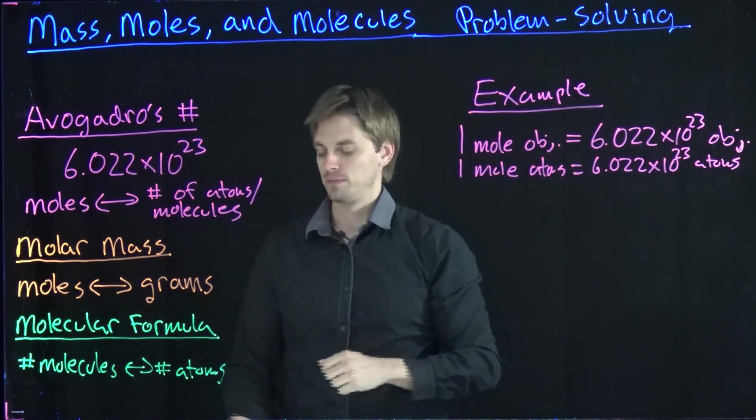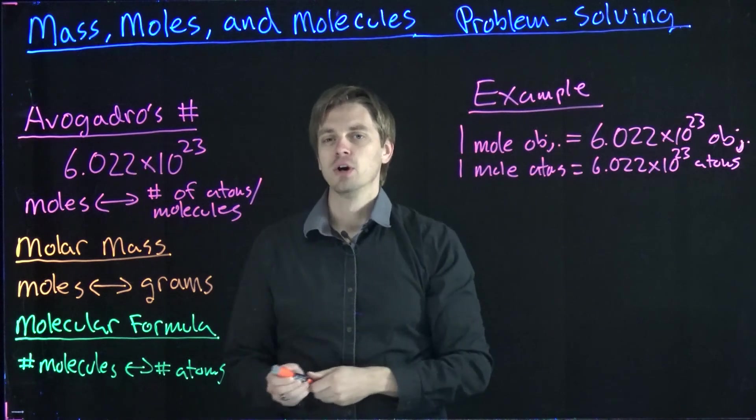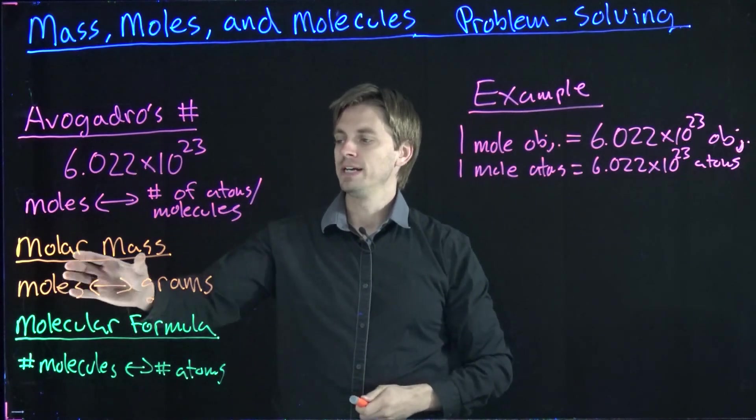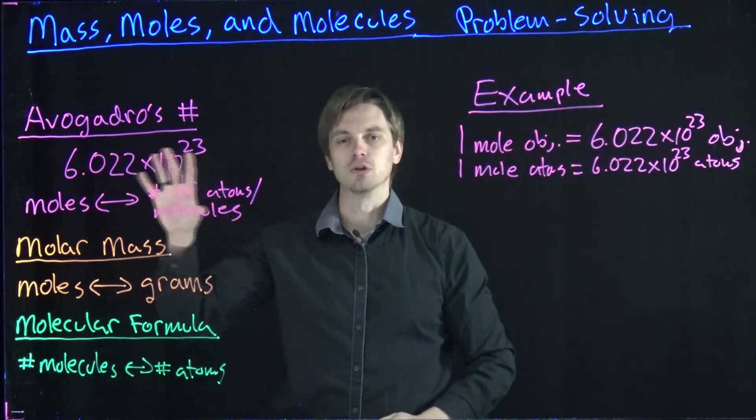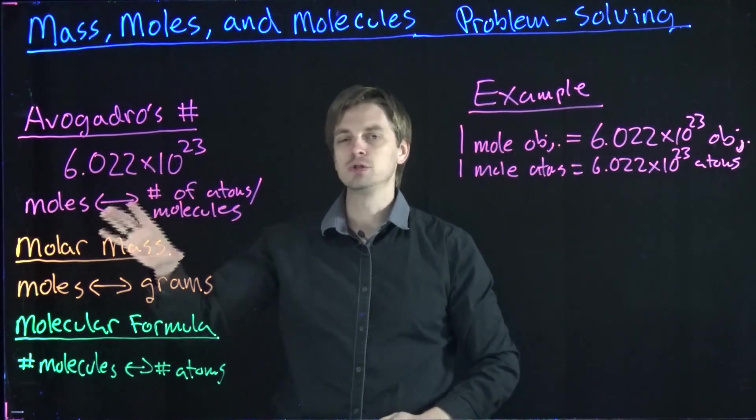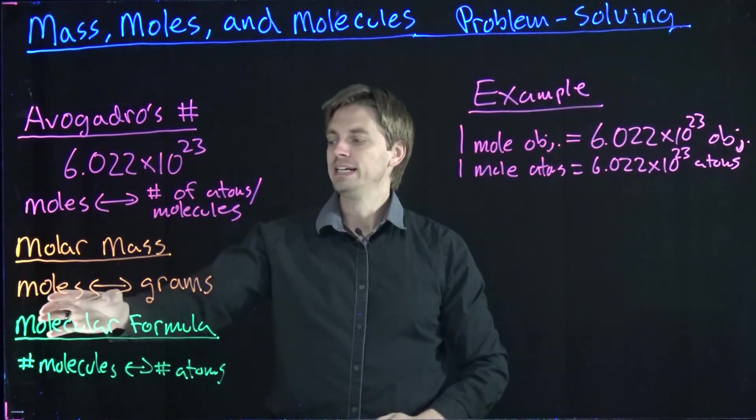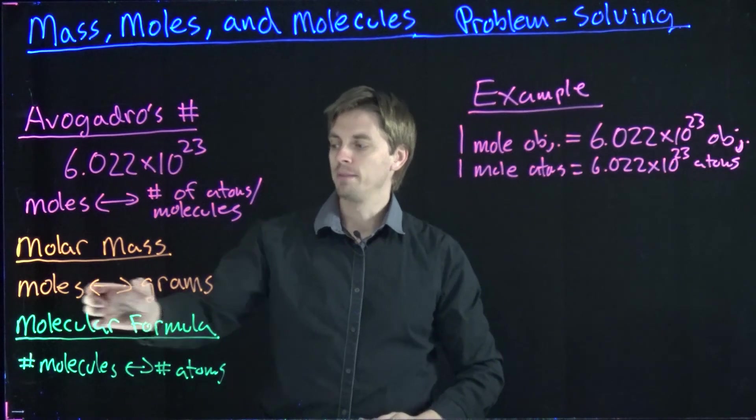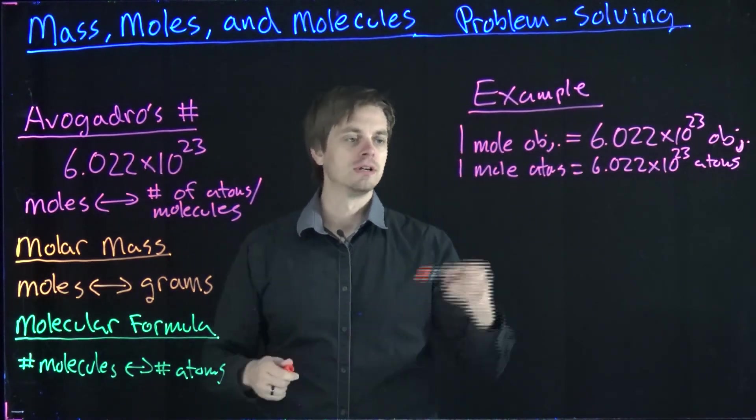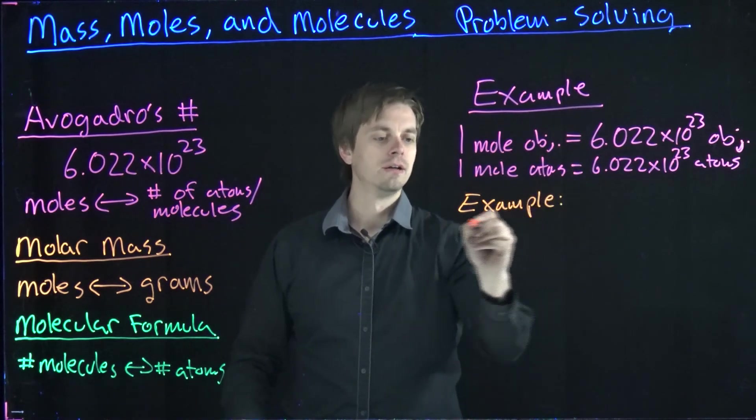Next on our list is this concept of molar mass, which we've talked about previously. Basically, this molar mass, which we obtain by looking at a chemical formula and the respective masses of each one of the atoms comprising that molecule on the periodic table, gives us a conversion factor that allows us to convert between grams and moles of that substance.